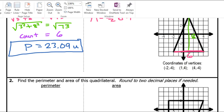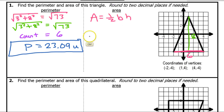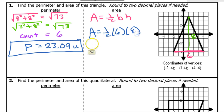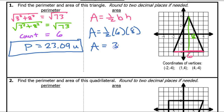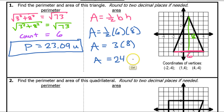When I do one-half base times height, that's going to be one-half times 6 times 8. Half of 6 is 3, so this becomes 3 times 8, which is 24. And because this is an area, I'm going to put units squared.